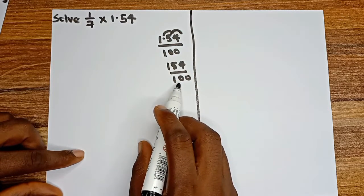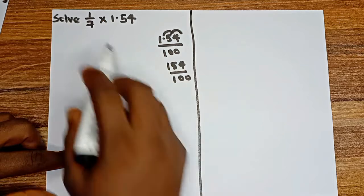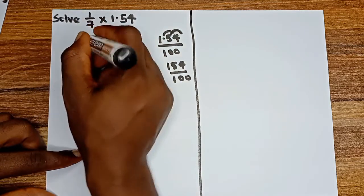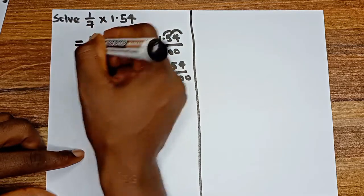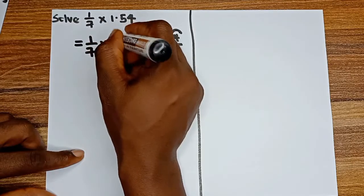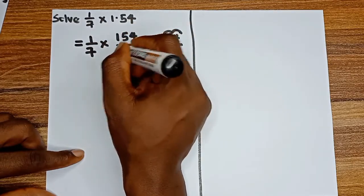We are going to write it here. So we have 1/7 multiplied by 154/100.